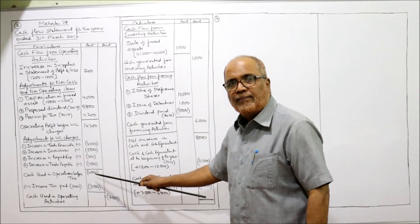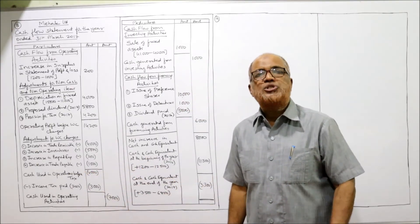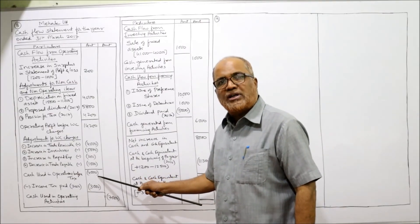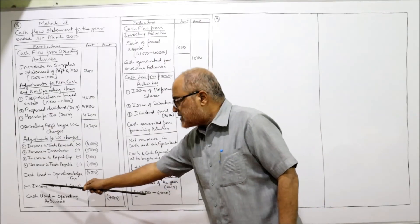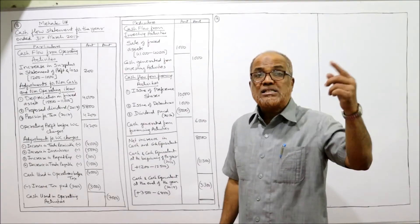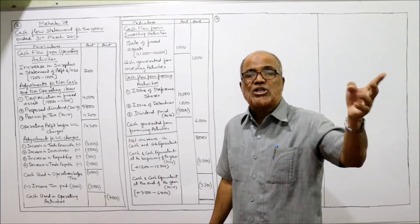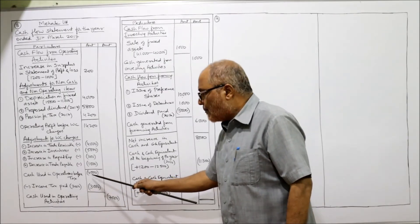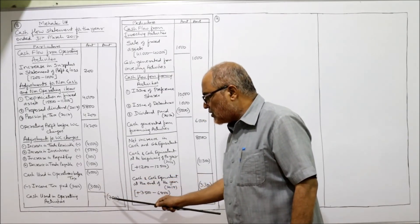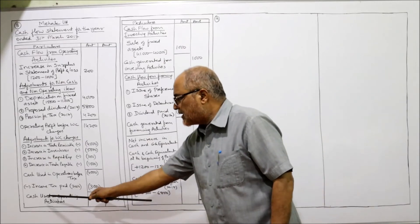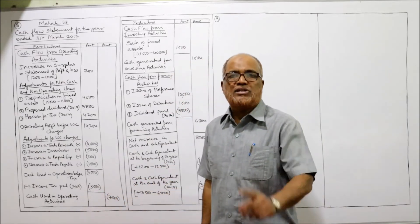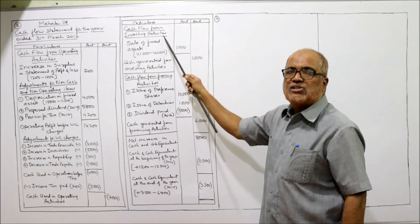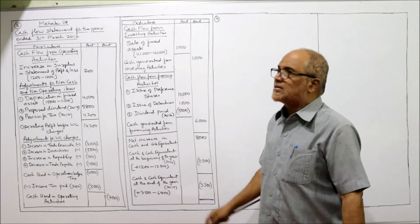You get cash generated in operations before tax. Less income tax paid: last year's provision for tax assumed paid during the current year is 3,000 — minus 3,000. So minus 7,000 — wait, this is cash used in operations. Less income tax 3,000 gives minus 7,000, which is cash used in operating activities. First section completed.